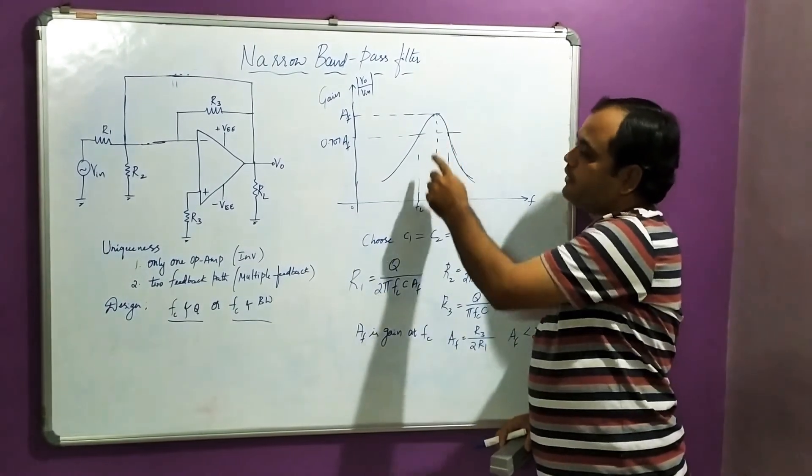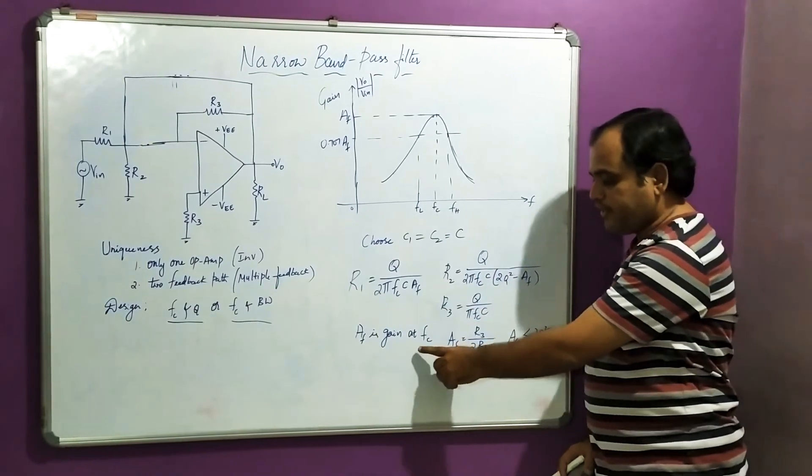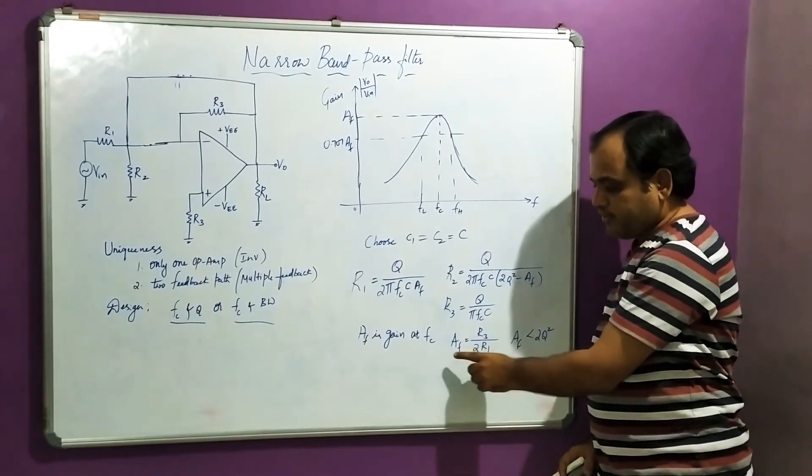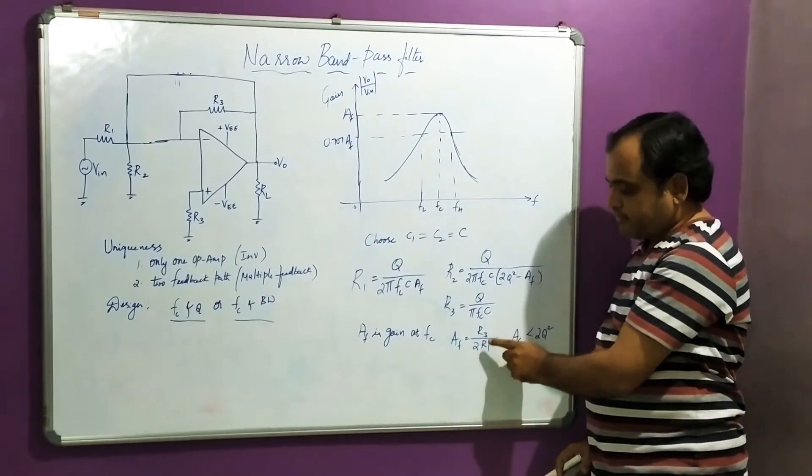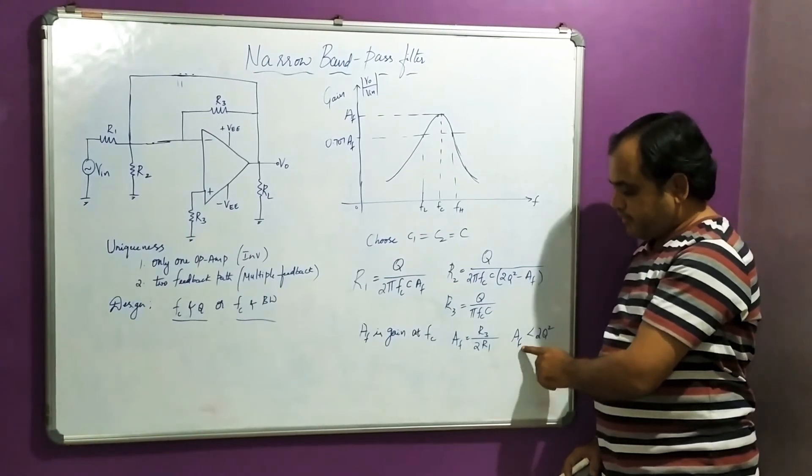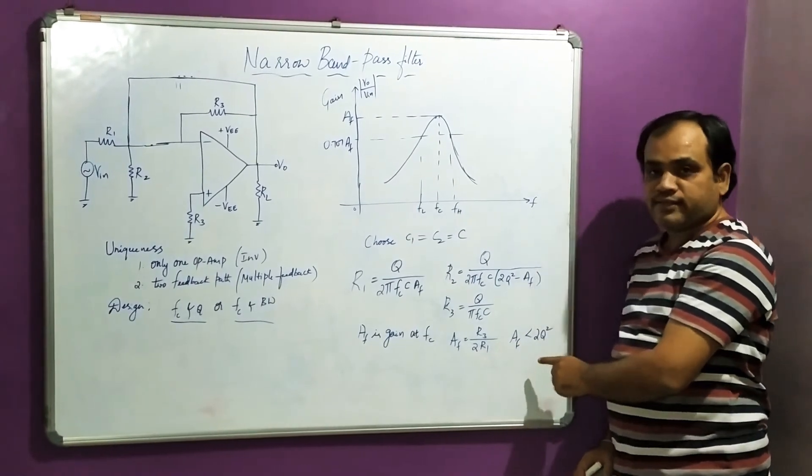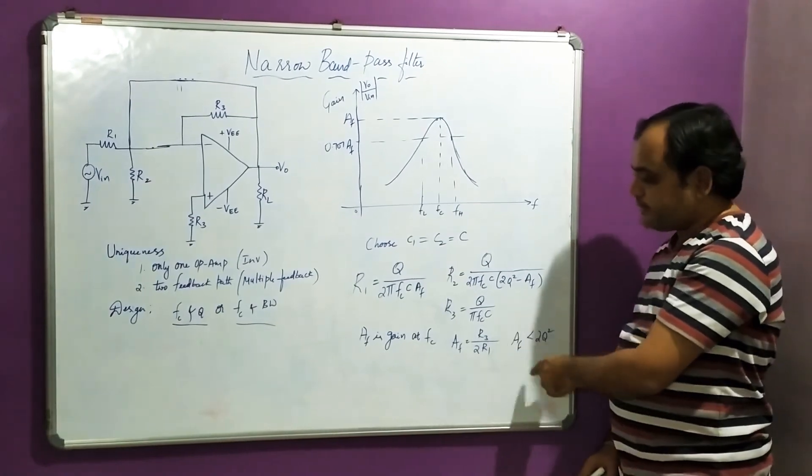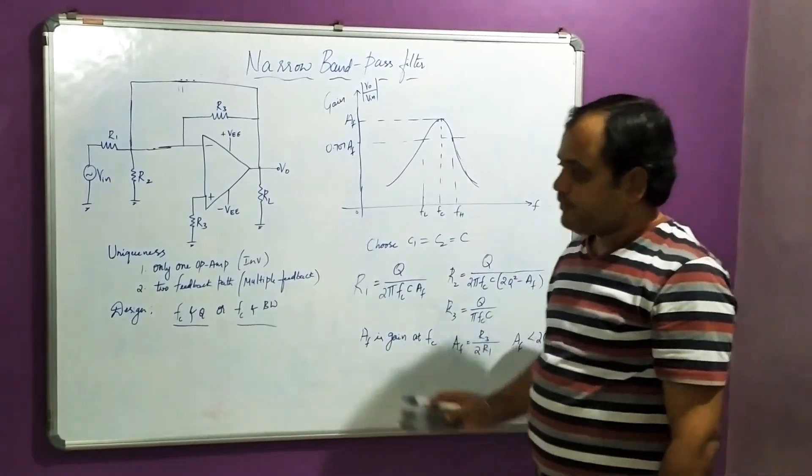Since the maximum gain with respect to center frequency is obtained at center frequency Fc, the gain is given as R3 by 2R1, such that AF should always be less than 2Q². This is the standard condition that has to be met.